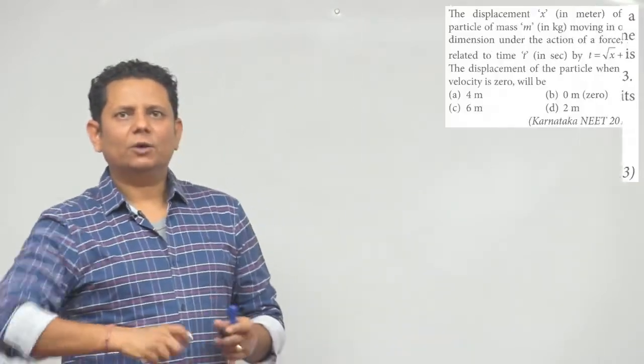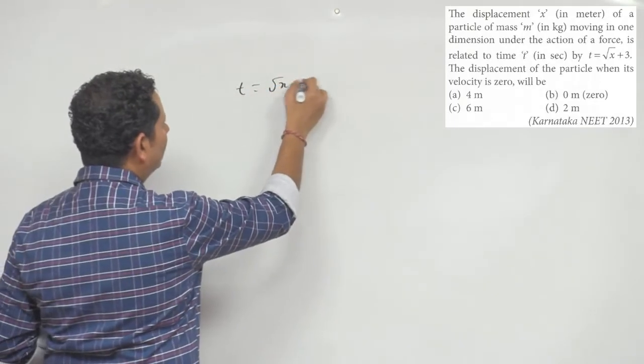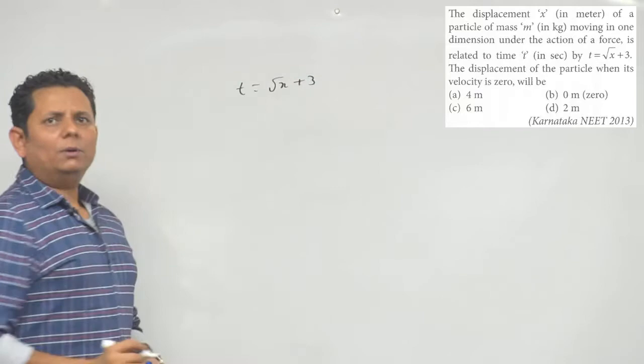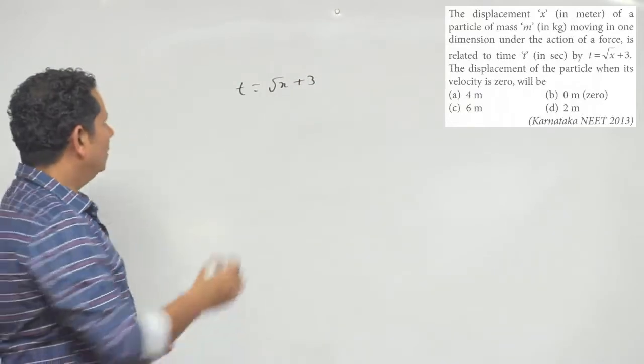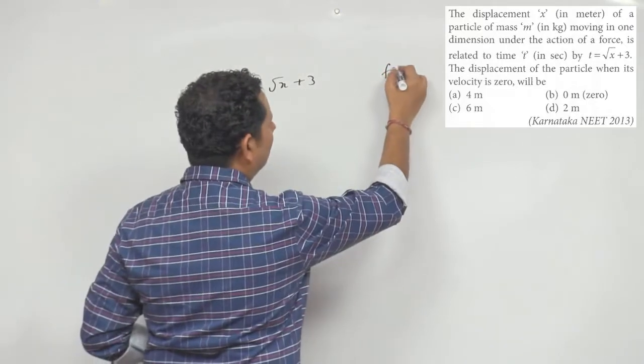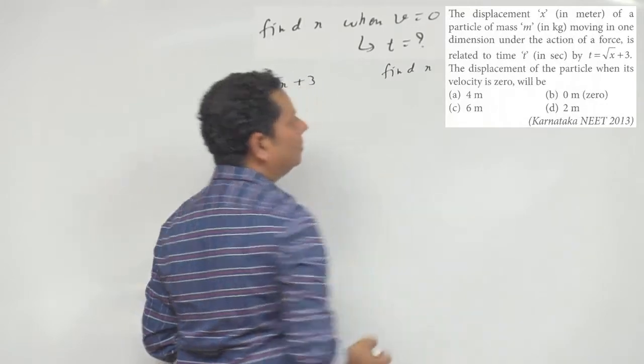The relation given to us is t equals square root of x plus 3. The question is, find the displacement of the particle when velocity is 0. So find x when v equals 0.